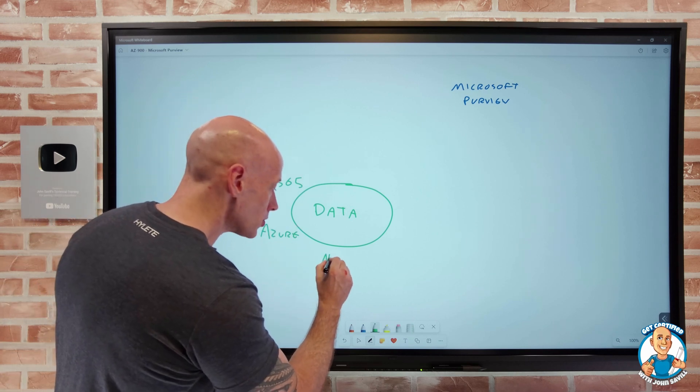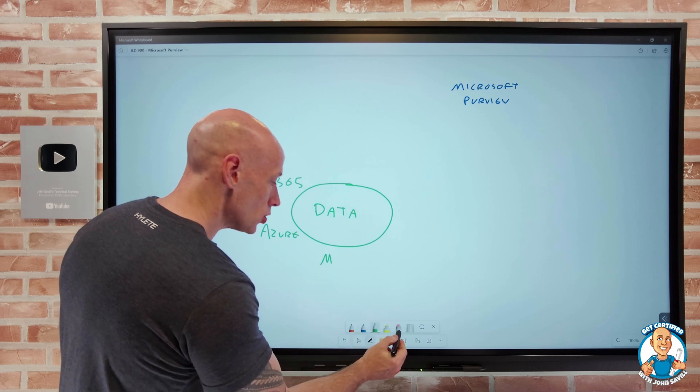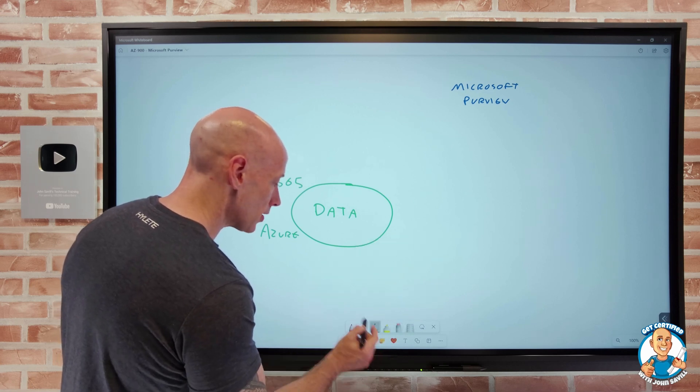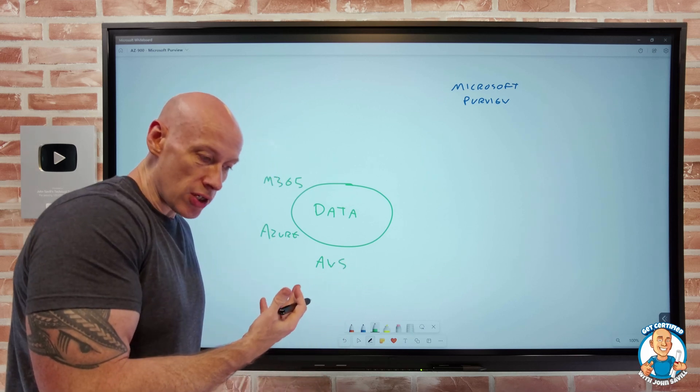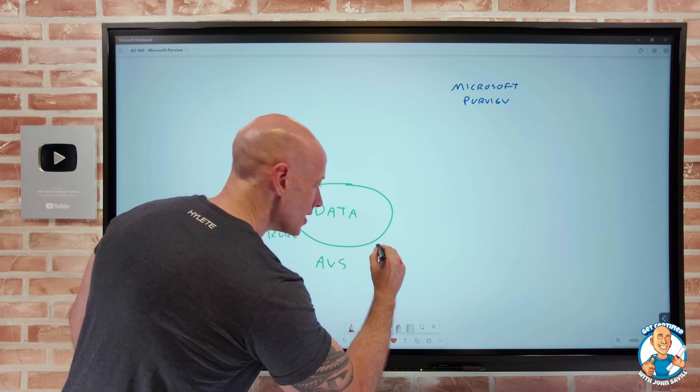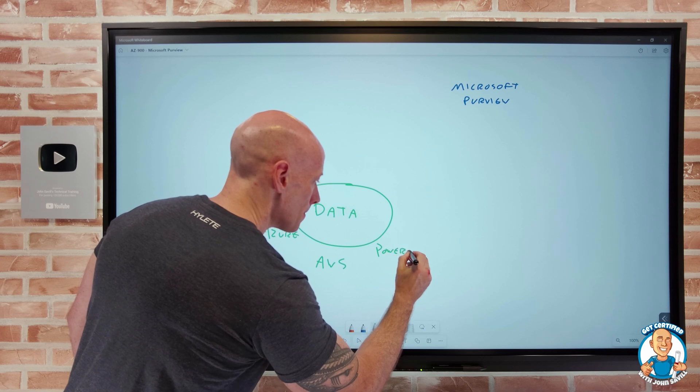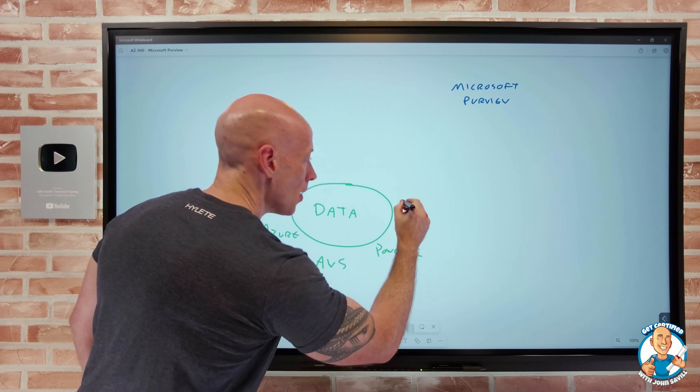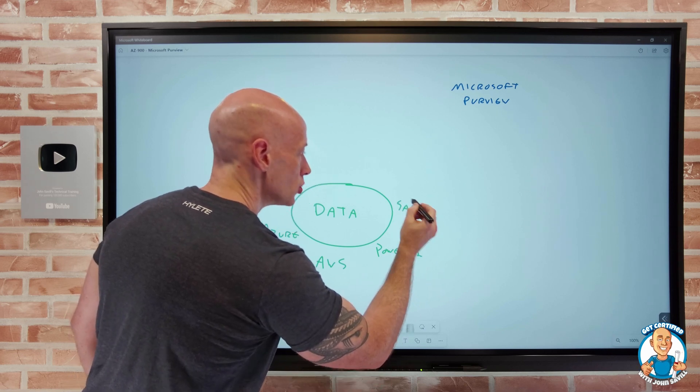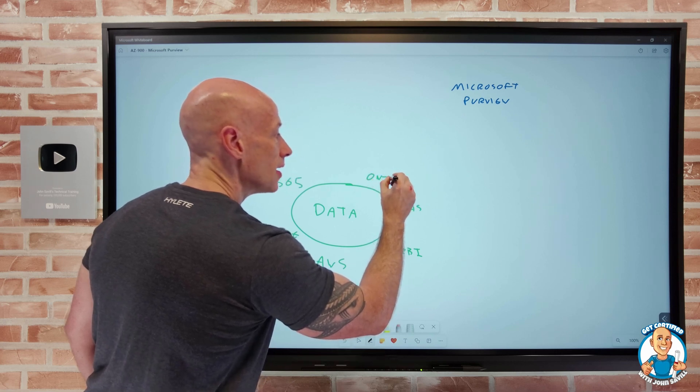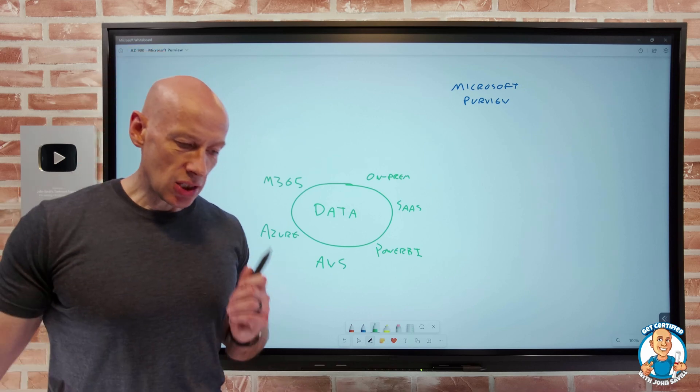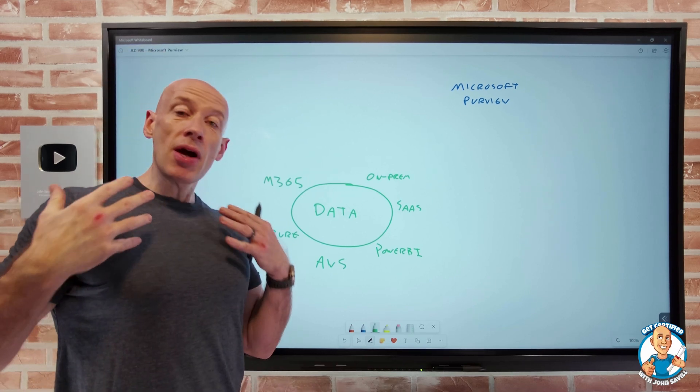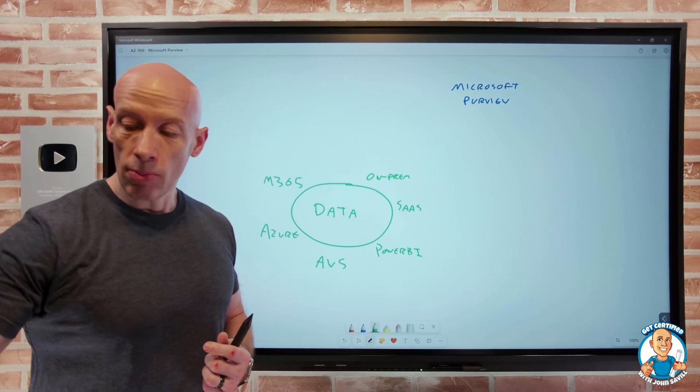It could be other clouds and their solutions as well. For example, I could think about Amazon Web Services and its S3 Storage Services. I might have data in Power BI, I might have data in other SaaS solutions, I may even have data on-premises. And so we have all these different data solutions, and Microsoft Purview supports a huge number of those.